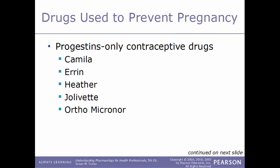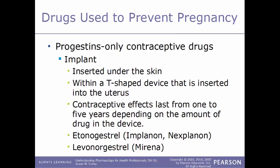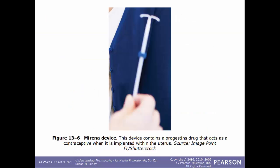Other progestin-only contraceptive options can be inserted underneath the skin or into the uterus in a T-shaped device, and the contraceptive effects can last from one to five years. Examples include etonogestrel, known by the trade names Implanon and Nexplanon, and levonorgestrel, known by the trade name Mirena — an IUD, intrauterine device, implanted within the uterus.